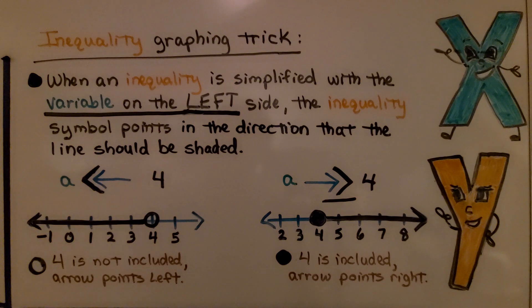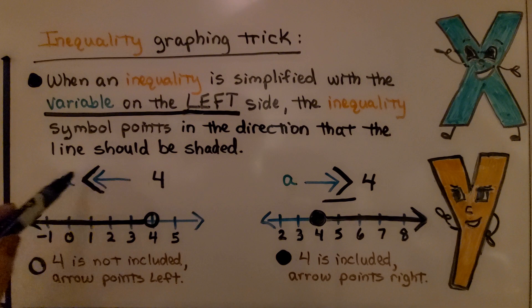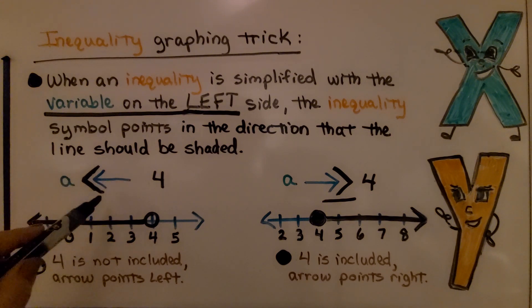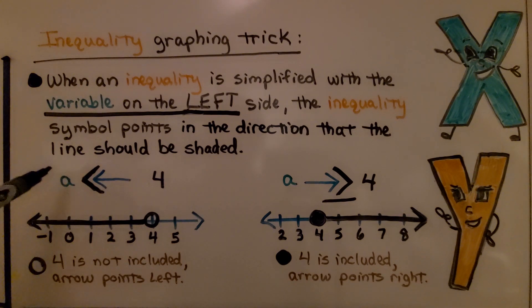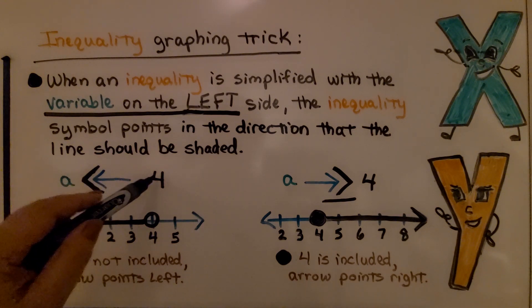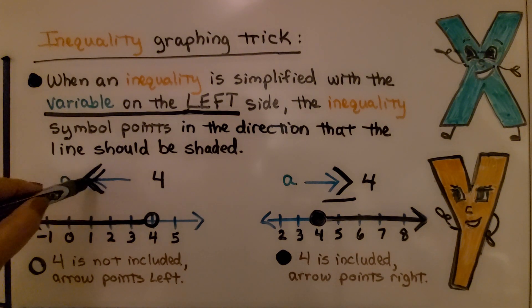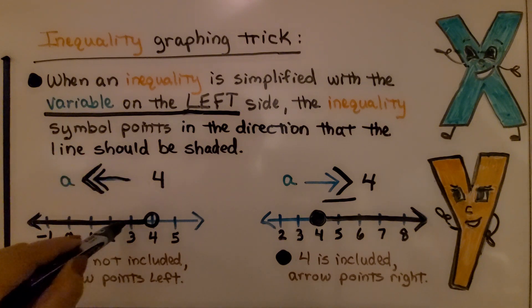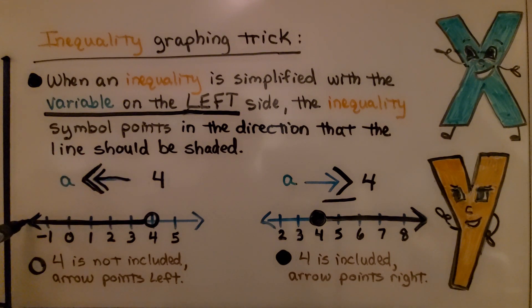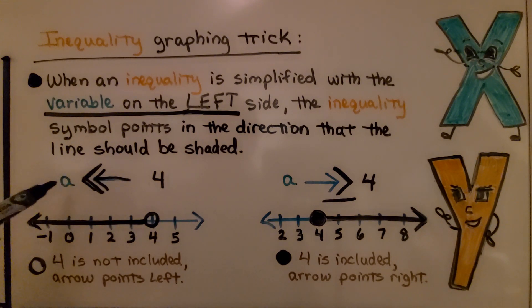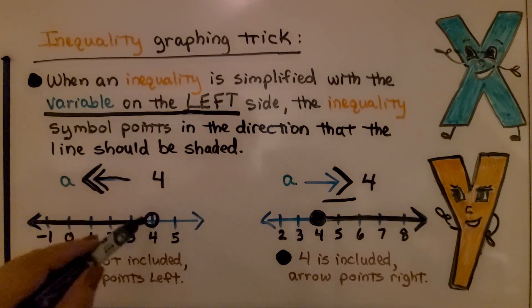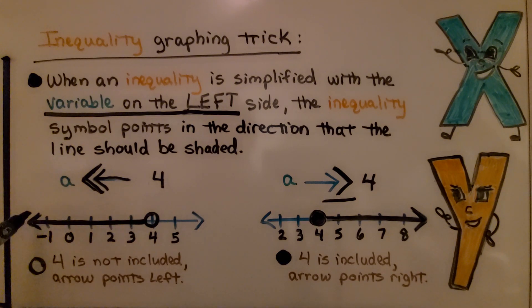Here's an inequality graphing trick: when an inequality is simplified with the variable on the left side, the inequality symbol points in the direction that the line should be shaded. If we have A is less than 4, our inequality symbol points to the left — picture it as the point of an arrow. So we shade and draw our arrow going left. Since A is less than 4, it doesn't include 4, so we use an open circle.